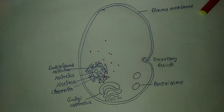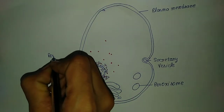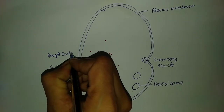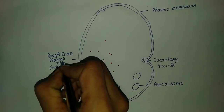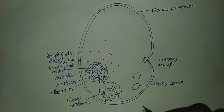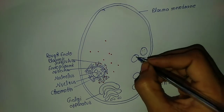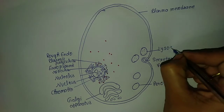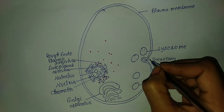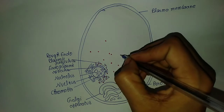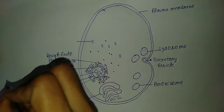Ribosomes are very important in protein synthesis. When ribosomes are present on the endoplasmic reticulum, it is called rough endoplasmic reticulum. When ribosomes are absent on the endoplasmic reticulum, it is called smooth endoplasmic reticulum. These are lysosomes. Lysosomes are present in the cytoplasm.